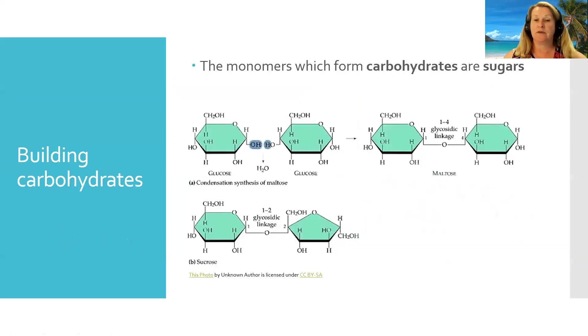So the monomers which are joined by dehydration synthesis to form a carbohydrate are sugars. And in this slide, you see the formation of the sugar maltose. You have two molecules of glucose. Now don't worry, you're not responsible for memorizing structures of particular sugars for the AP exam. One glucose gives up an OH, one gives up a hydrogen atom, and they form a bond, a linkage.